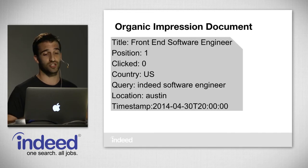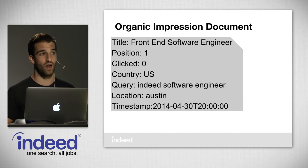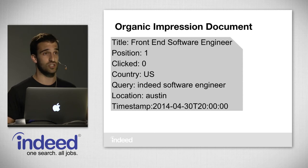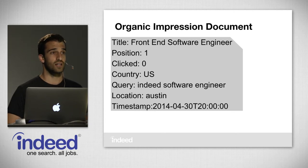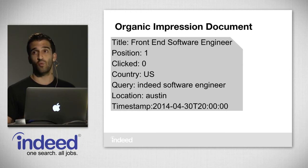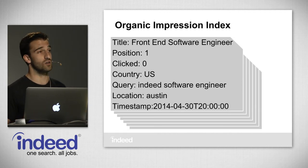We actually want to log a lot more — this is just a snippet of the breadth of things we log on a single organic impression. A basic organic impression document includes: title 'Front-End Software Engineer,' position one (the first ranked organic job), whether it was clicked (zero in this case), the country (United States), the query 'Indeed Software Engineer,' the location Austin, and the timestamp. We store this into what's called the Organic Impressions Index.